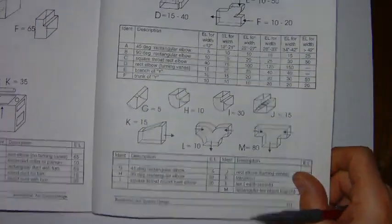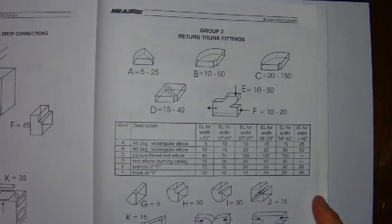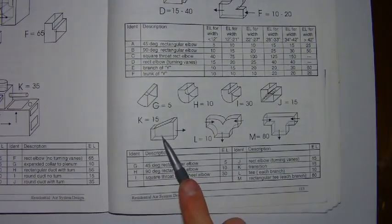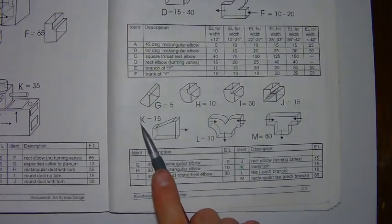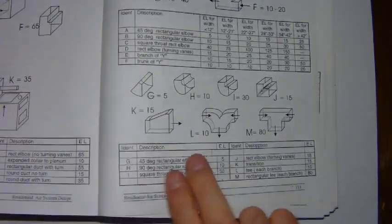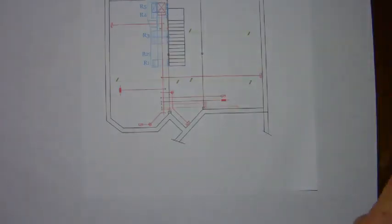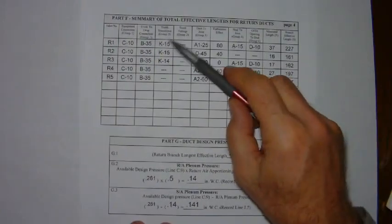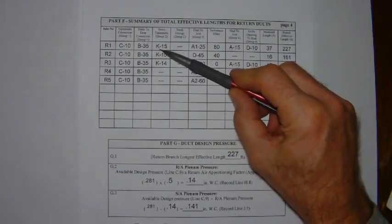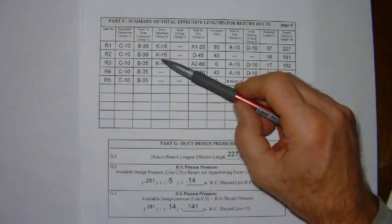And so when you look at the group two fittings, you'll see the transition is indicated as a K fitting and it is associated with 15 feet of equivalent length. Therefore run number one will have the K fitting with 15 feet.